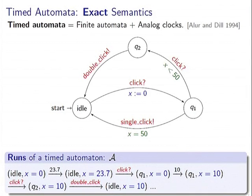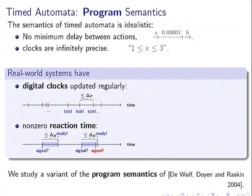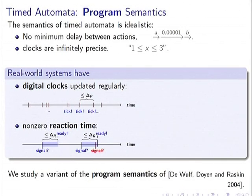This is the usual natural semantics — the exact semantics. Timed automata are abstract models and therefore idealistic. For example, timed automata assume there is no minimum delay, no lower bound on delays between actions. This means we assume the system can do two actions one after another with a very small delay between them, which is not realistic. We also assume clocks are perfectly continuous and infinitely precise.